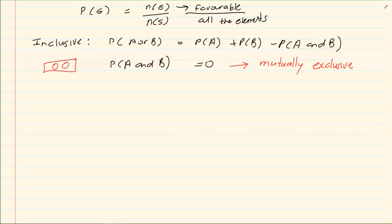Then we have where P of A or B is equal to 1. This is called exhaustive.